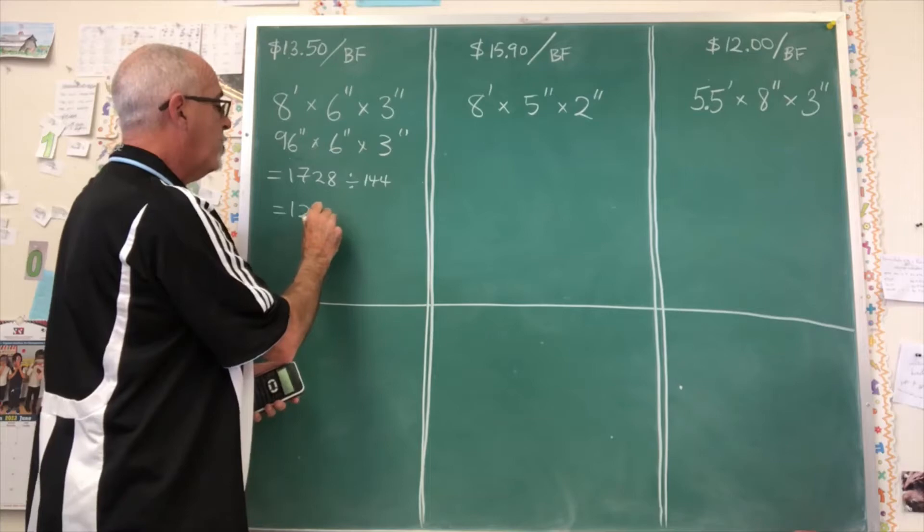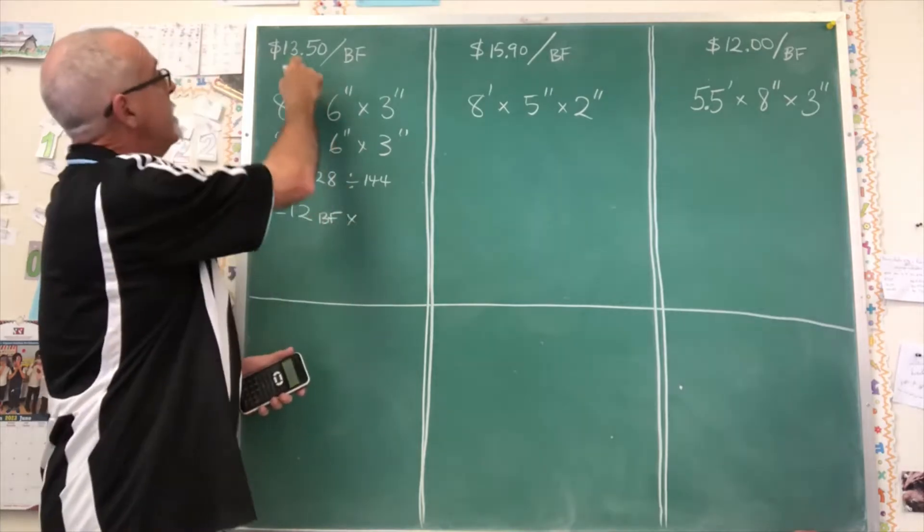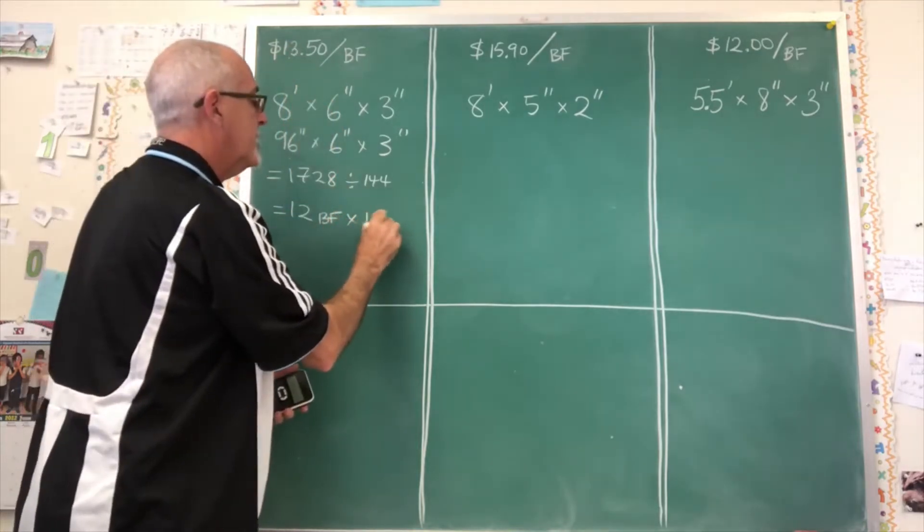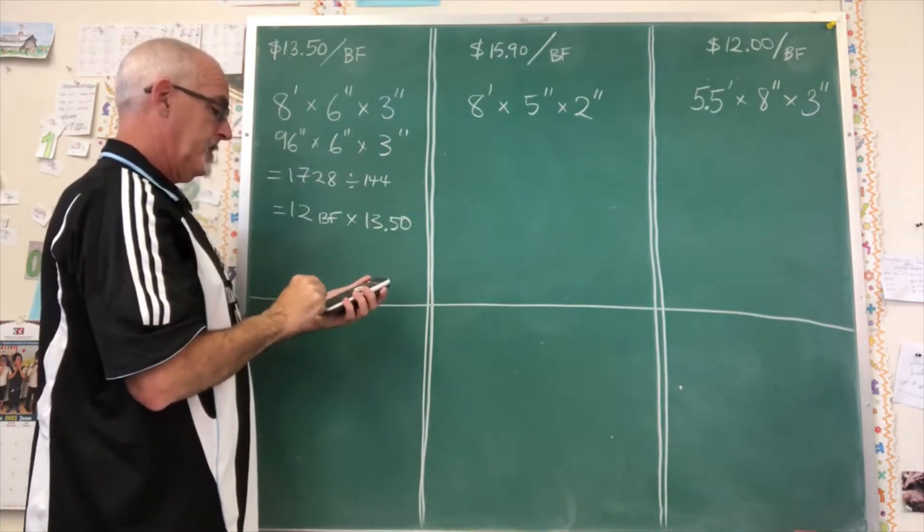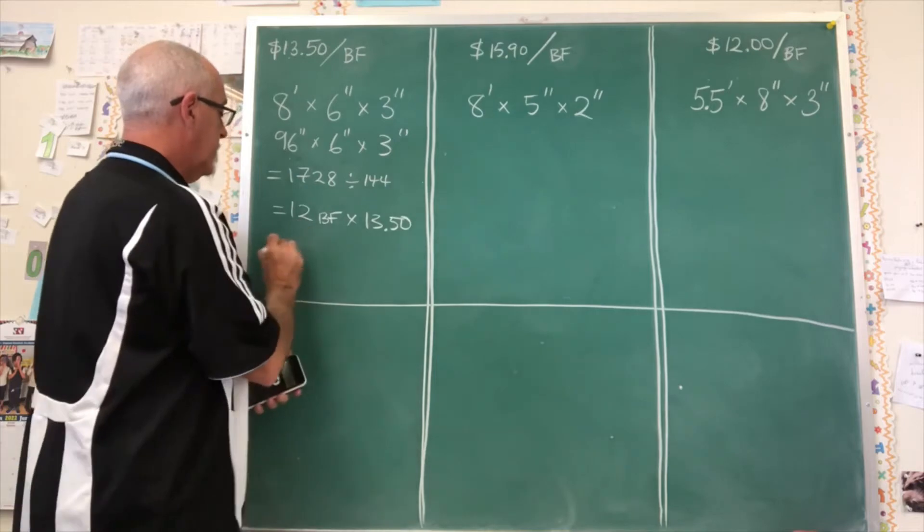We have to multiply that by the $13.50 cost per board foot, and we get $162.